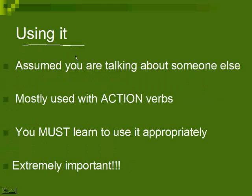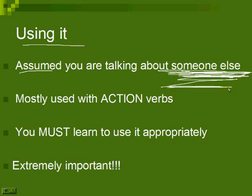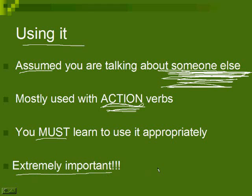Using it again — when you're talking about someone else. If you don't say who's doing the action, it's assumed you're talking to the listener, so someone else. This is mostly used with action verbs. In the last lesson you learned action versus descriptive. You can get away without using honorifics with descriptive verbs, but with action verbs it's a must. You must learn to use it appropriately because it's extremely important — when you're talking about someone else who's older than you.